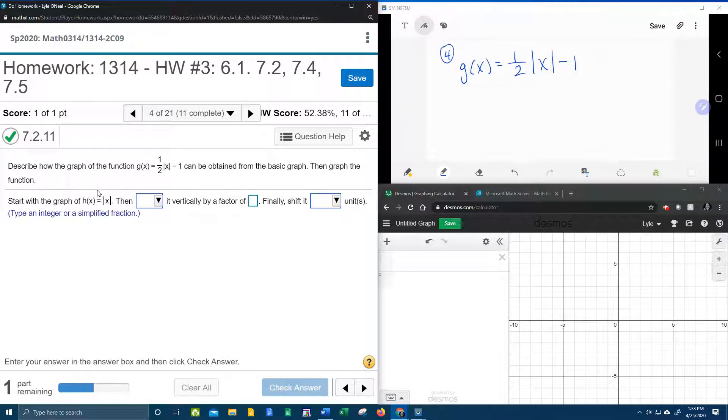So start with the parent function, and you need to know that the coefficient of the function, here the one-half is the coefficient of the absolute value, that's going to be a vertical stretch or compress.